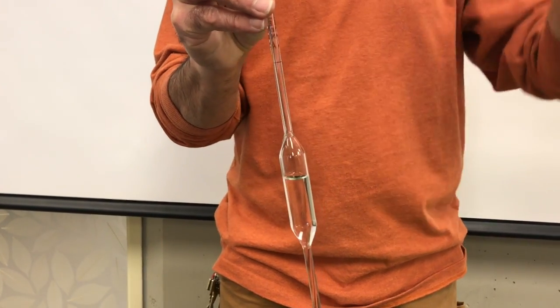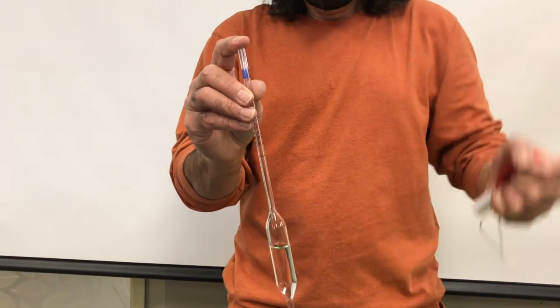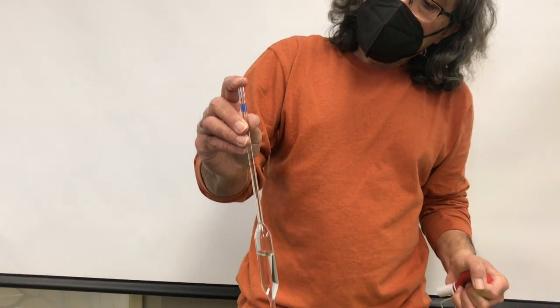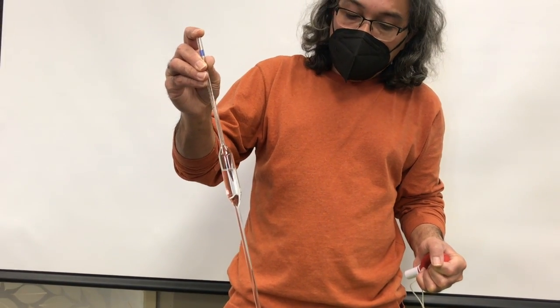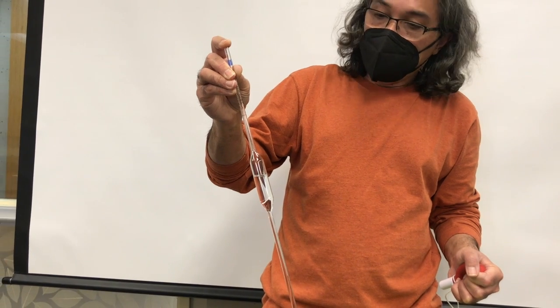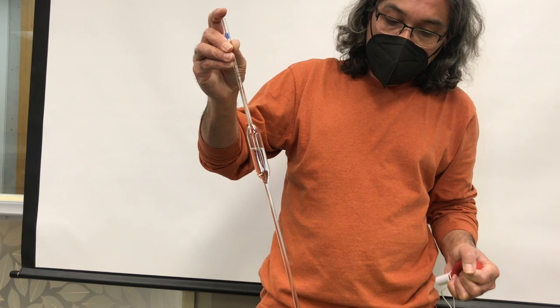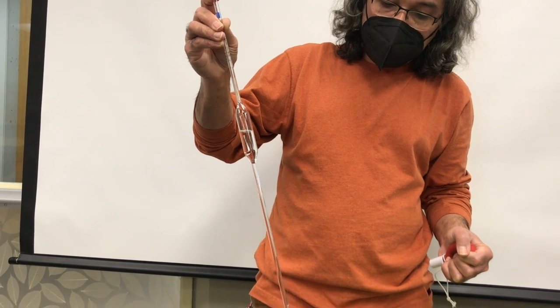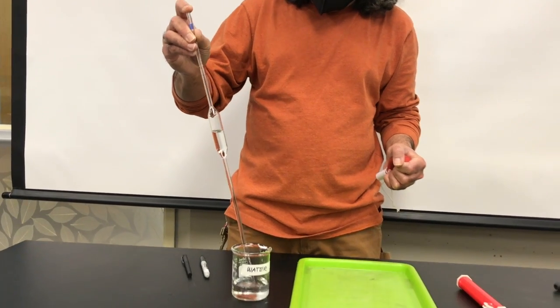Oftentimes, you're going to have to do two pumps to be able to fill it all the way. So notice how I'm using my index finger to close the end of the volumetric pipette so that no liquid comes out of it. If I was to release the vacuum, then liquid will come out, but then I just use my index finger to keep the liquid from coming out.